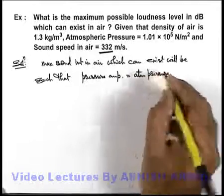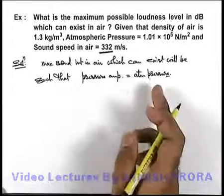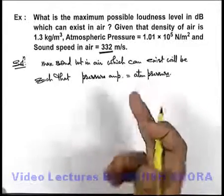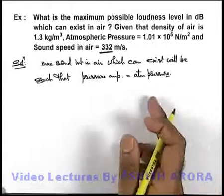if pressure amplitude goes above atmospheric pressure, mathematically the pressure at any point where rarefaction is occurring will become negative, which is not possible. The minimum pressure which can exist at a point is zero.